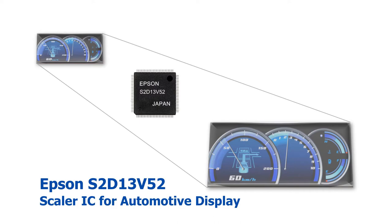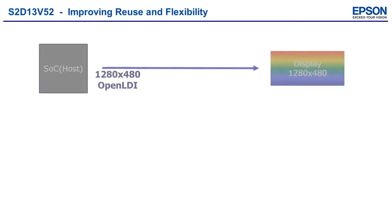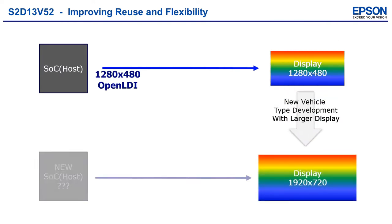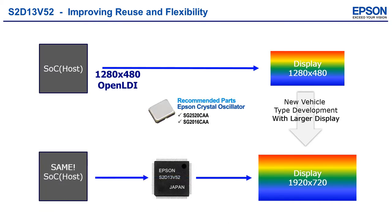Introducing the Epson S2D13V52, a video scaling integrated circuit designed to up or down scale streaming image data. Use the S2D13V52 to leverage existing system designs with a larger display.